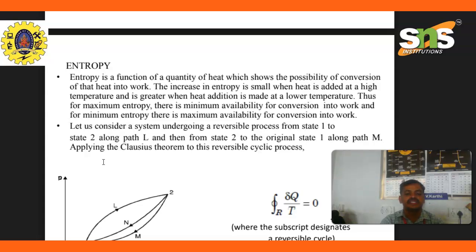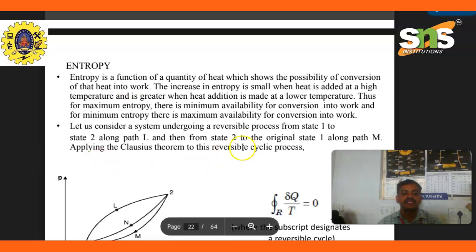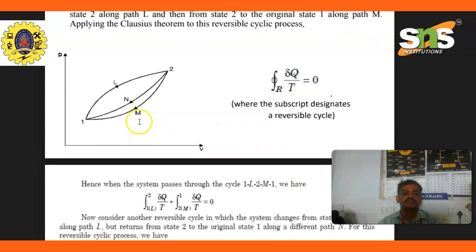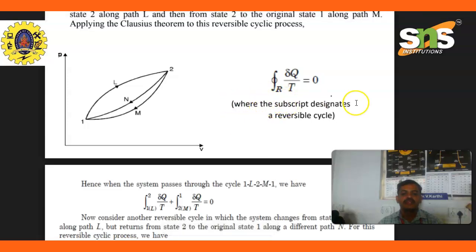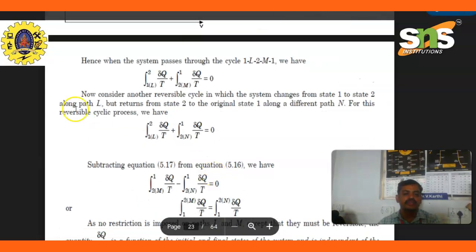Let us consider a system undergoing a reversible process from state 1 to state 2 along path L, then from state 2 to the original state 1 along path M. Applying the Clausius theorem to this reversible cyclic process, the cyclic integral designates a reversible cycle.